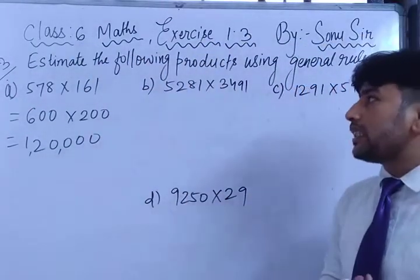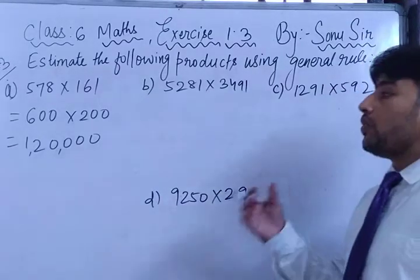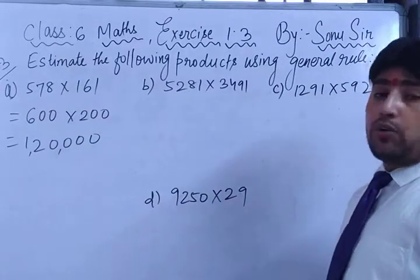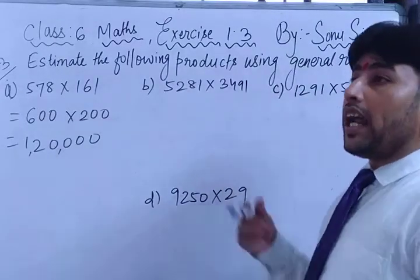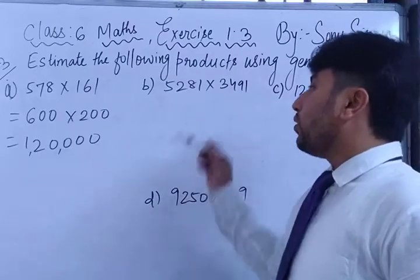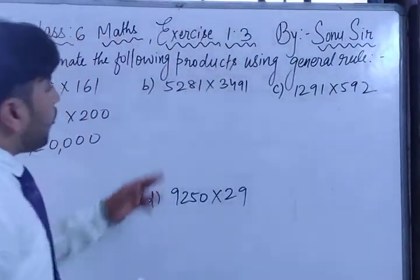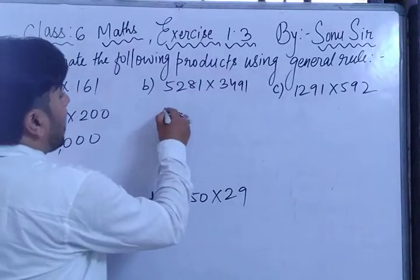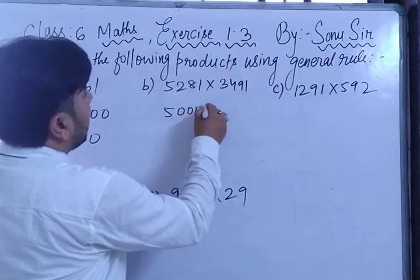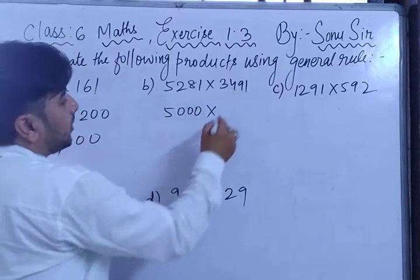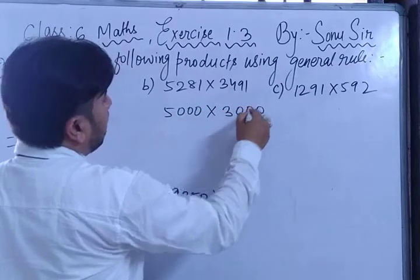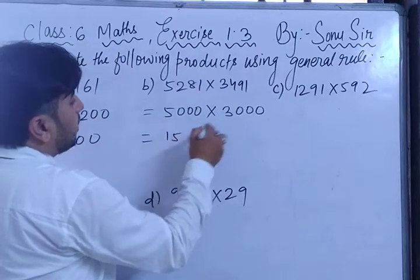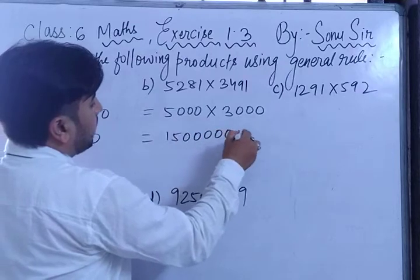What I want to say is you have to understand till which value you have to do the rounding. Here you can see it's a 4-digit number, so you round to the nearest 1000. What will be the round figure value of 5281 to the nearest 1000? It will be 5000. And the other number rounds to 3000, because it is not 3500 — it is less. So 5 × 3 = 15, giving 1 lakh 50,000.